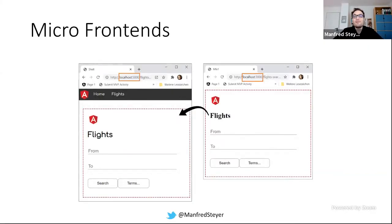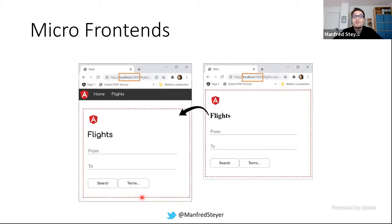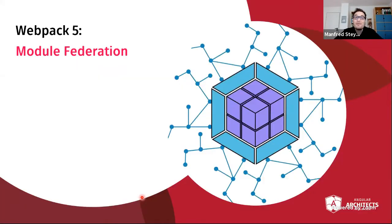Micro front-ends are about building individual front-ends and loading them into a common shell, so that the user has the impression they're working with one integrated solution. But in reality, they are working with several different applications perhaps created by different teams. Like with Leonardo da Vinci's helicopter, we've had this idea for quite a long time — almost five years — but we didn't have good materials to build something like this.